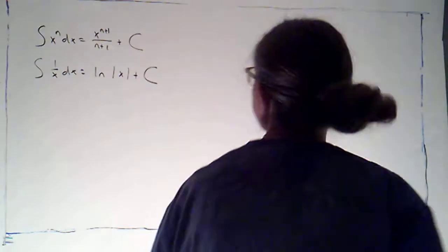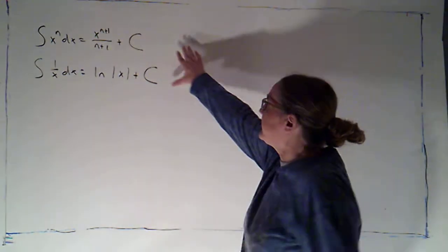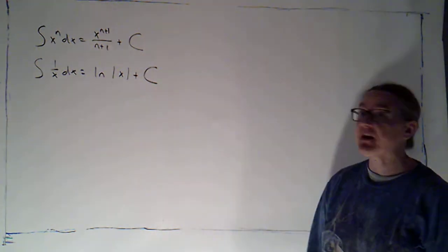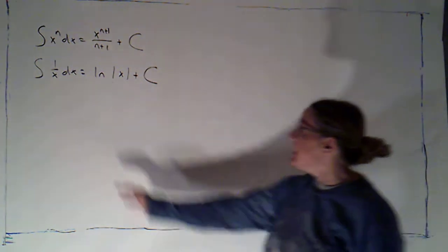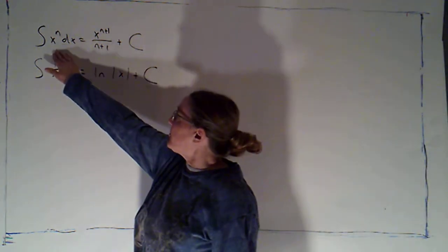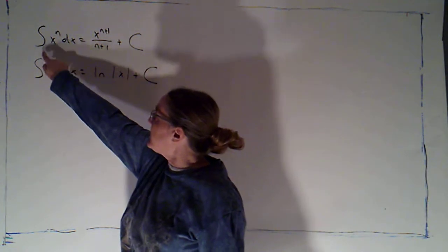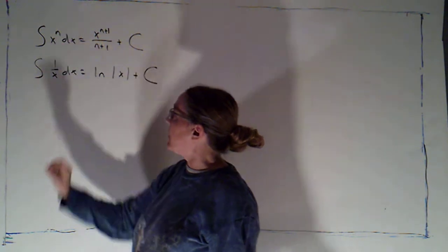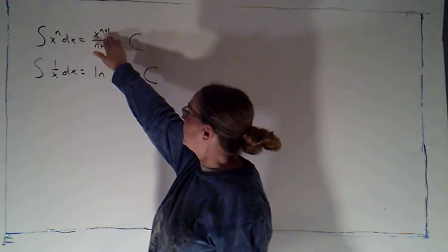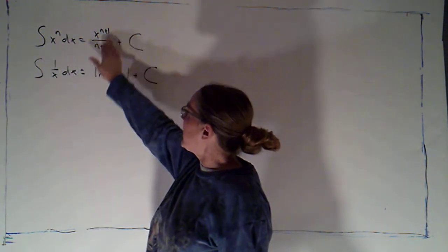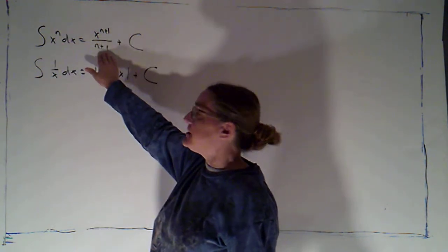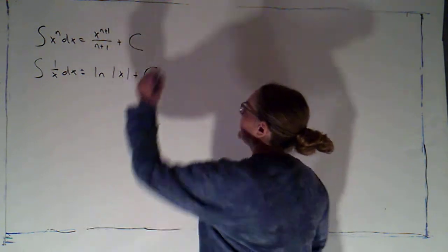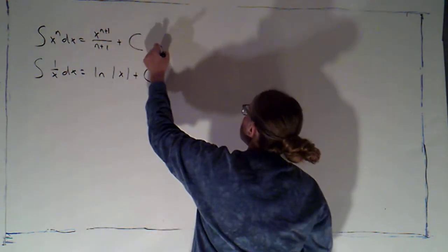I've written down a couple of formulas for antiderivatives of particular types of functions that we have already. We've got our power rule. If I'm integrating x to a fixed power, I raise the power by 1, divide by the new power, and of course we add c.